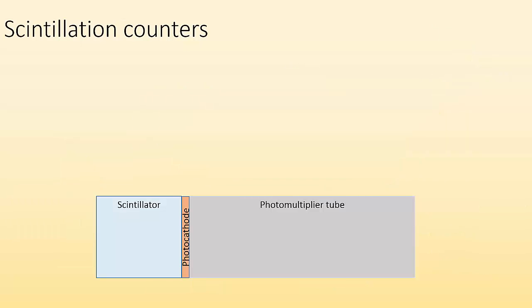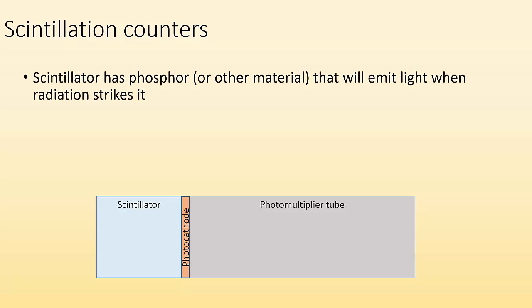All right, there's also these things called scintillation counters, which I think are pretty neat. So the big idea is that a scintillator has a phosphor or some other material that will emit light when radiation strikes it. We've got some atoms inside here, and then when radiation comes in, it'll hit those atoms, and those atoms will give off light. So each time a piece of radioactive particle comes in, boom, it causes light to be emitted.